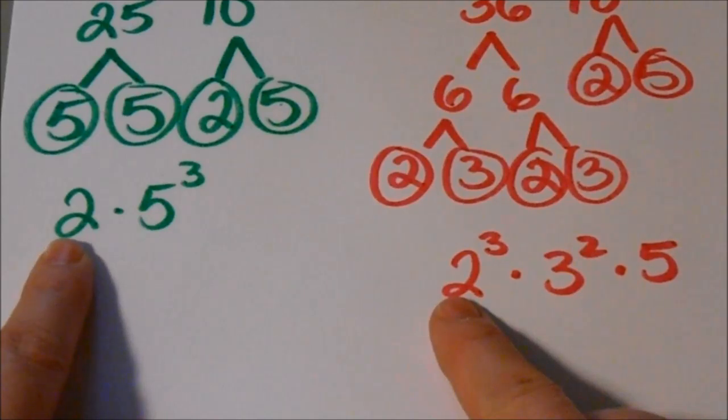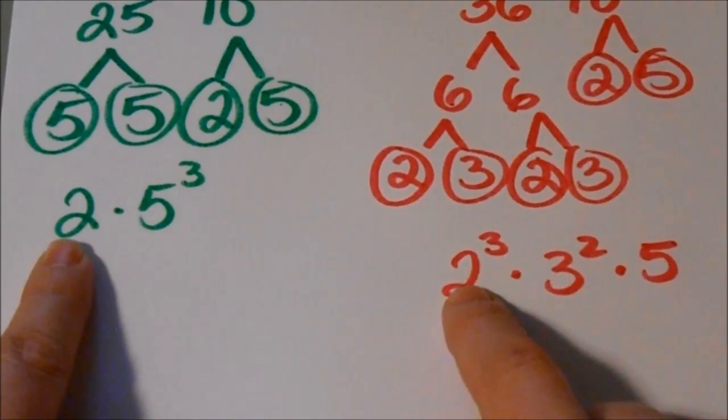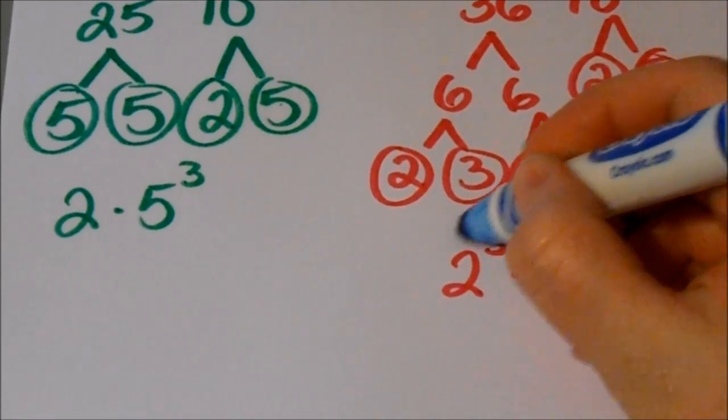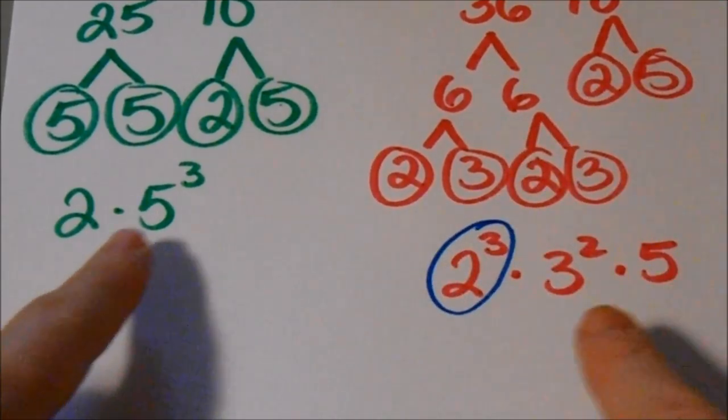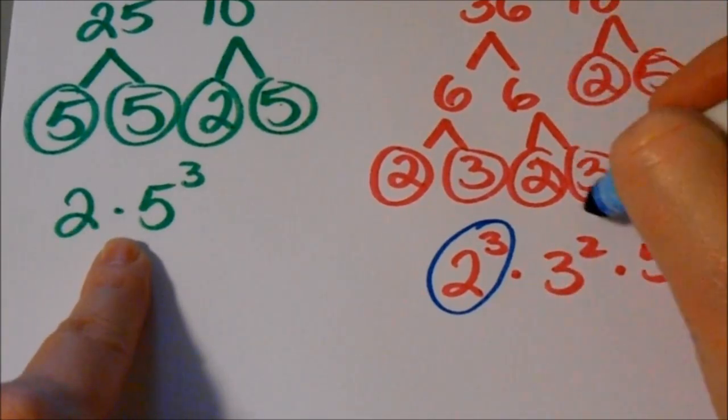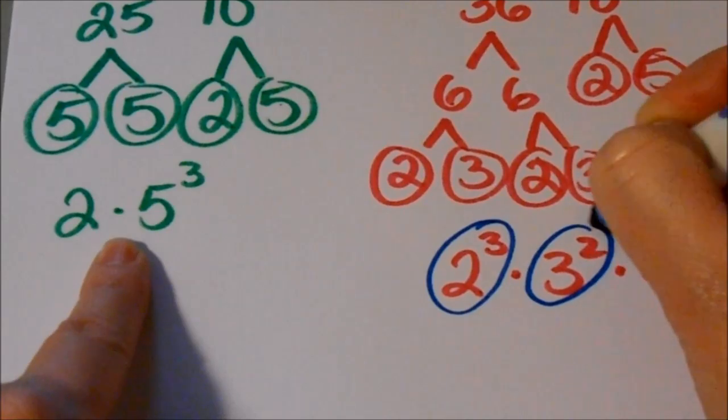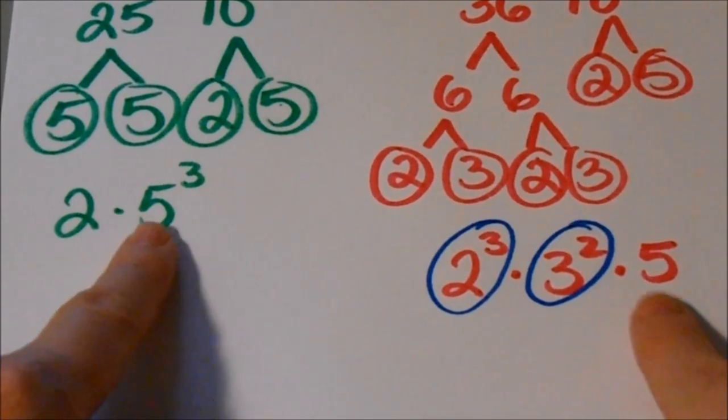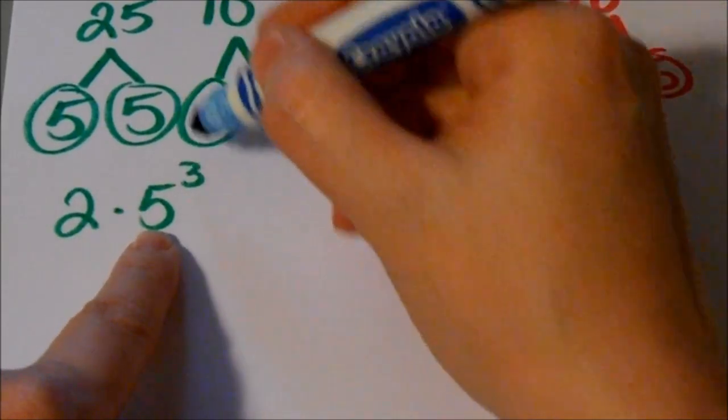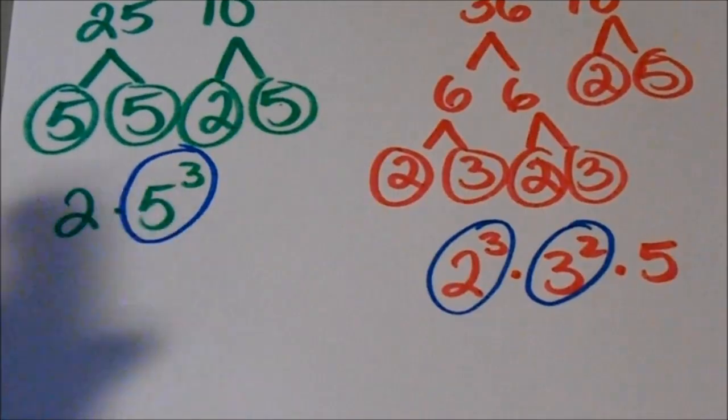Because I have 2 as a base number in both of my numbers, I'm going to use this one, 2 cubed, because it shows up the most in 360. So I'm just going to circle that one. Okay. I don't have 3 in both of my numbers. So this is the only 3 as a base. So I'm going to use that one. And then 5 shows up as a base number in both of my numbers. But this one, it shows up the most because it's got, it's 5 cubed. So I'm going to use that one.